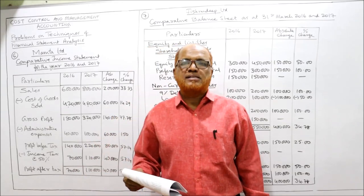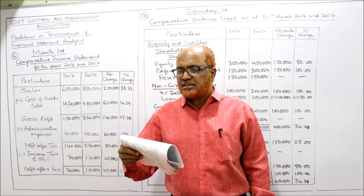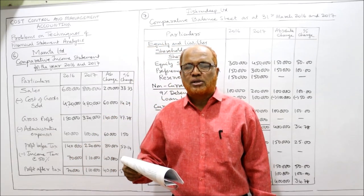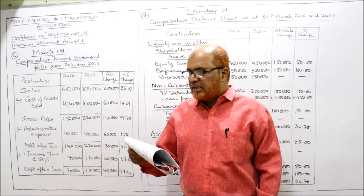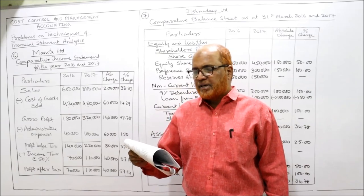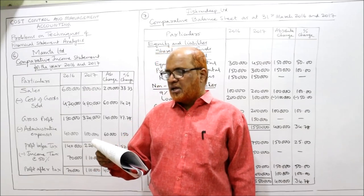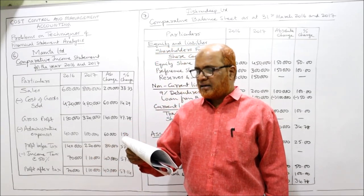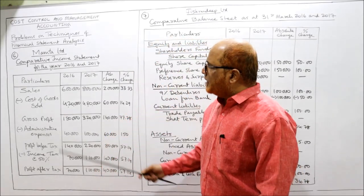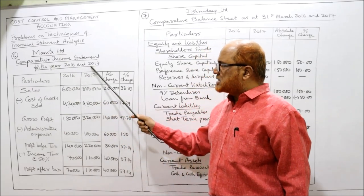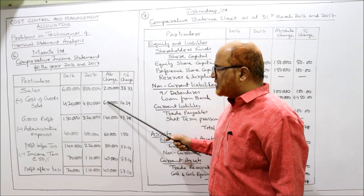Now we will start the next problem — problem number 6. From the following data pertaining to Manta Limited, prepare comparative statement of profit and loss — that means we have to prepare a comparative income statement. The data is given for 2016 and 2017. Sales, gross profit ratio percentage 30% and 40%, administrative expenses 40,000 and 1,00,000, and income tax percentage 50%. It's a very small problem. Manta Limited comparative income statement for 2016-17, with columns for 2016, 2017, and afterwards absolute change and percentage change.